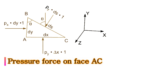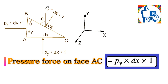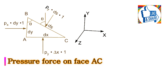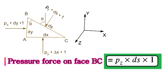Similarly, for face AC, the pressure Py acts perpendicular to face AC and the area is dx into 1, so the pressure force on face AC equals Py into dx into 1. For face BC, the pressure force equals Pz into ds into 1. These are the different pressure forces acting on the different faces of the triangular wedge-shaped fluid element.